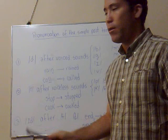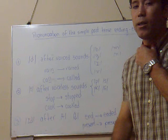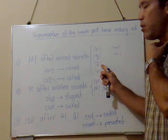We use d after voiced sounds. Voiced sounds like b produce vibration in our throats — for example, g, z, v.